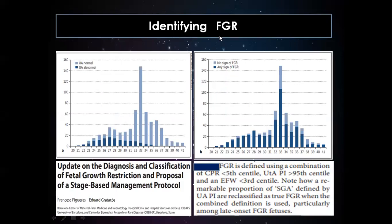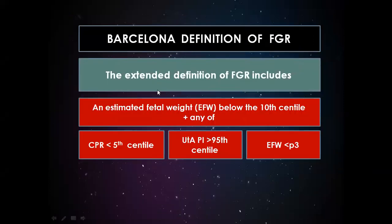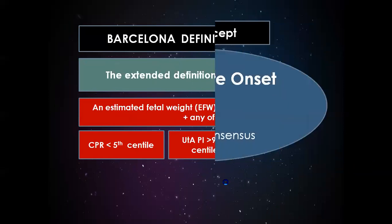According to a large RCT by Figueras and Gratacós, incorporating CPR, uterine artery Doppler, and estimated fetal weight less than the 3rd percentile showed that a remarkable portion of SGA can be grouped as FGR. The extended definition now defines FGR when estimated fetal weight is below the 10th percentile with any of: CPR less than 5th percentile, uterine artery PI more than 95th percentile, or estimated fetal weight less than 5th percentile.